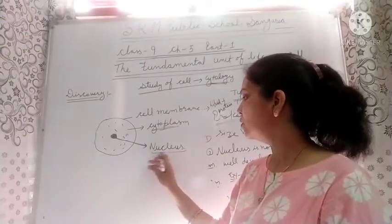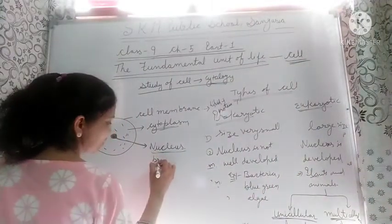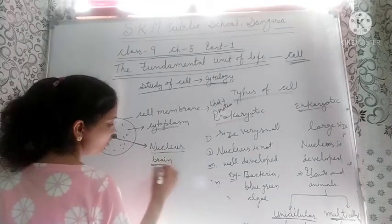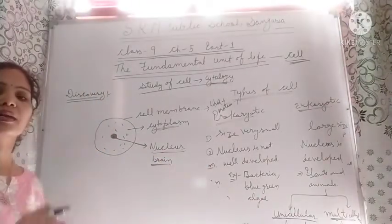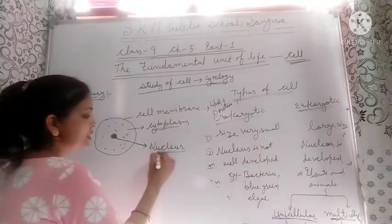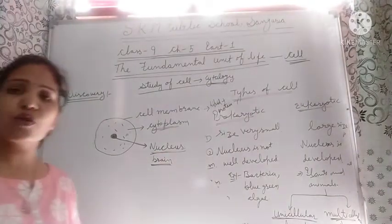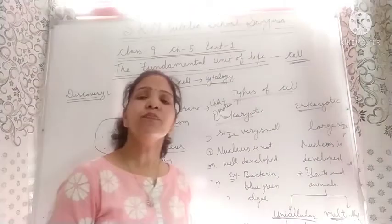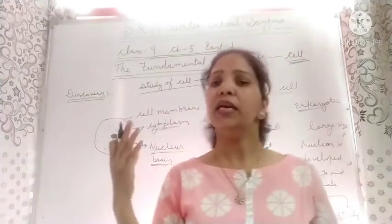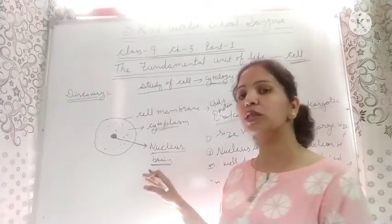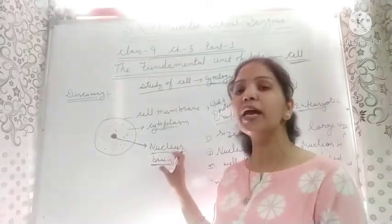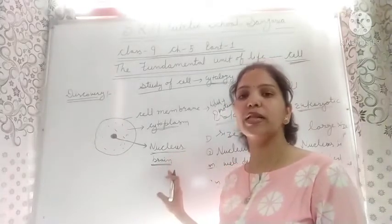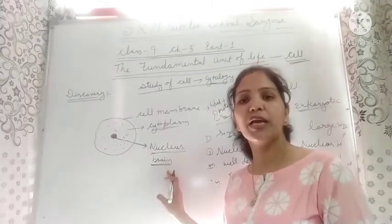The cell membrane is also known as the plasma membrane. It is a semi-permeable membrane and is made up of lipid and protein. The nucleus is known as the brain of the cell because all the functions of the cell are controlled by the nucleus, just as all body functions are controlled by our brain.